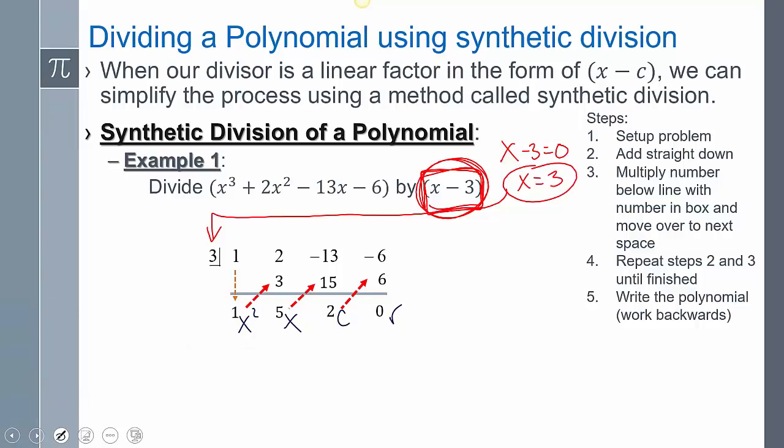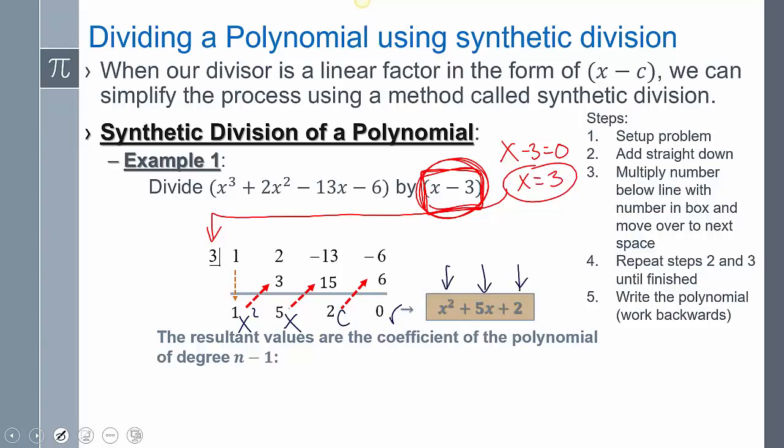So then I can write out my polynomial as one x squared plus five x plus two, and I don't have my remainder. And so that's going to be my value after I did my division.